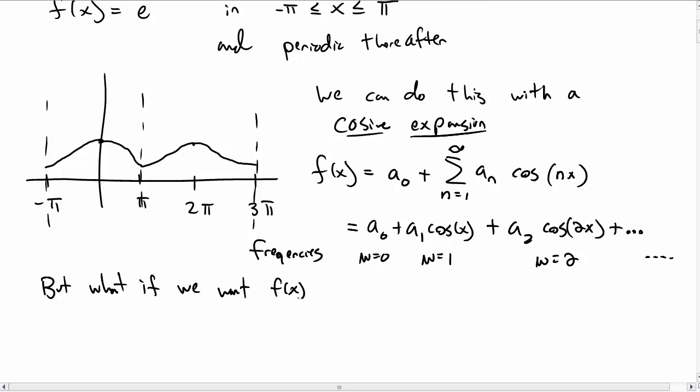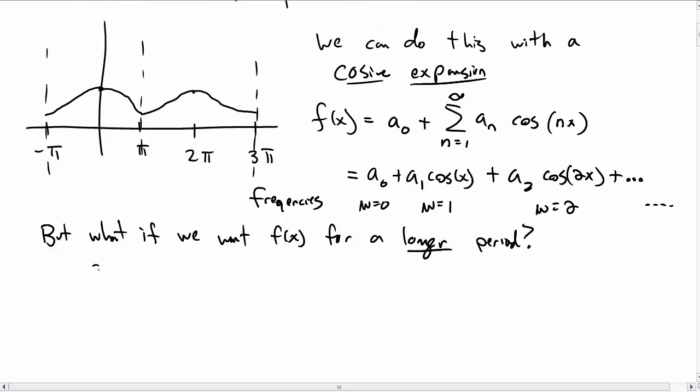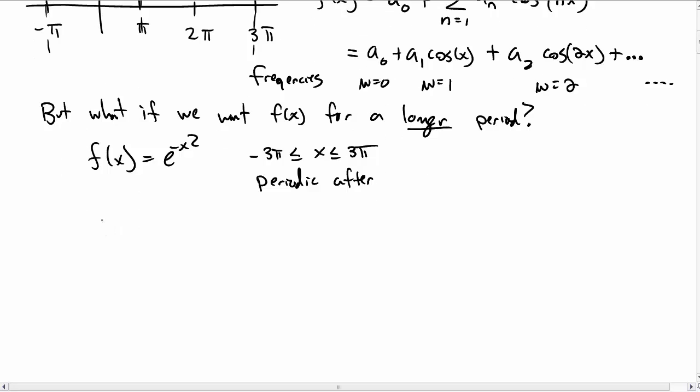But what if we now want to extend where this function is valid? What if we want f(x) not for negative π to π, but from negative 3π to positive 3π? So if we want our function in this region, and then periodic outside of that, let's take a quick sketch.